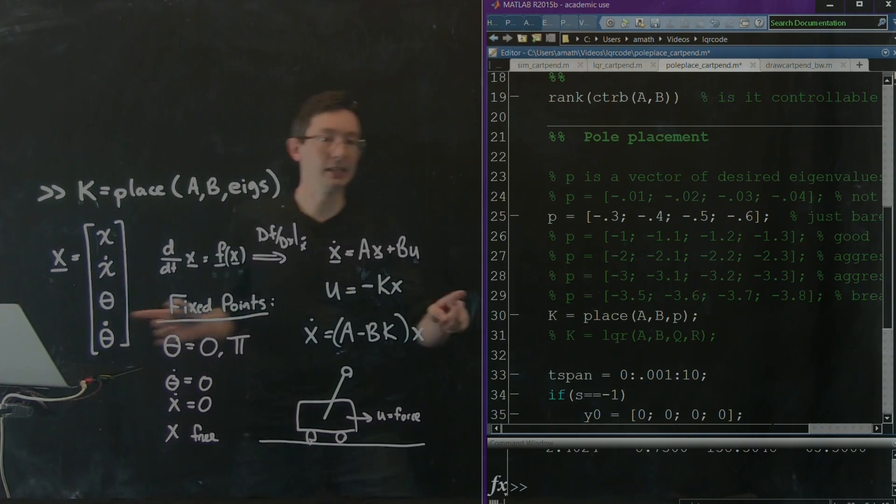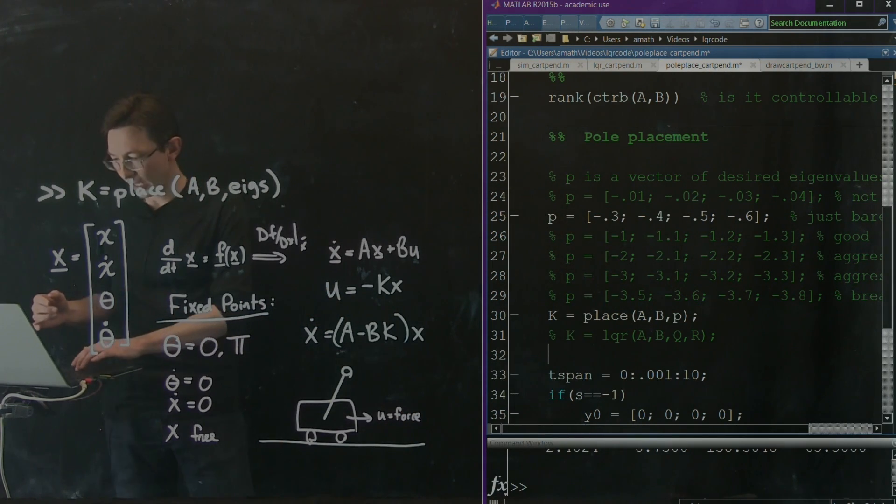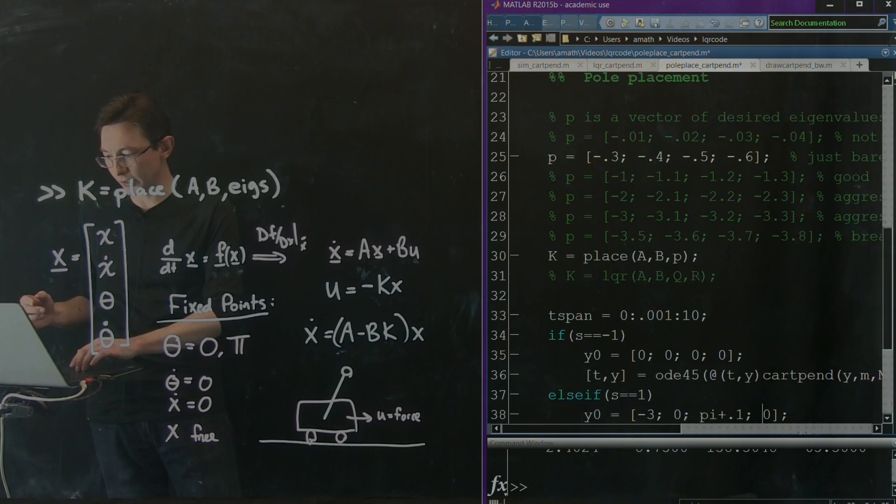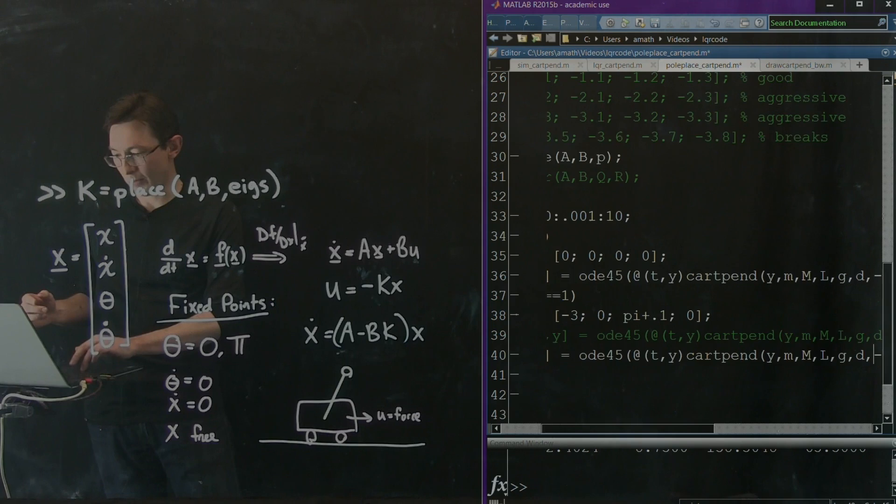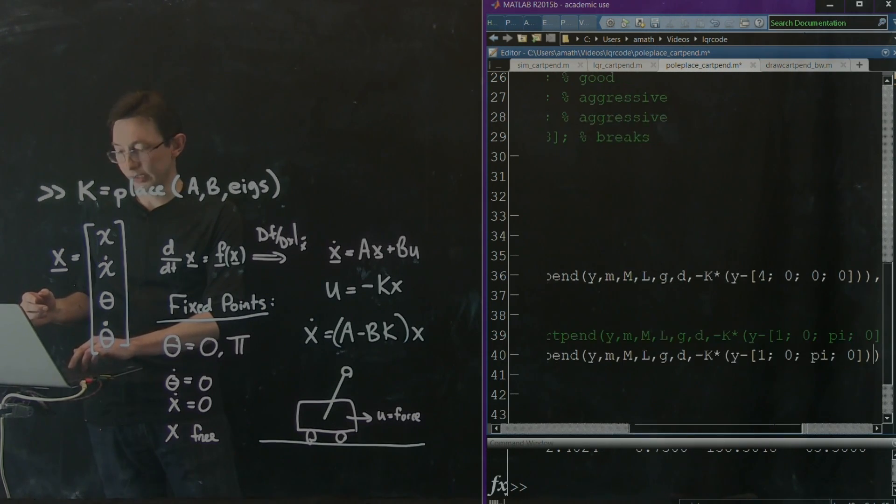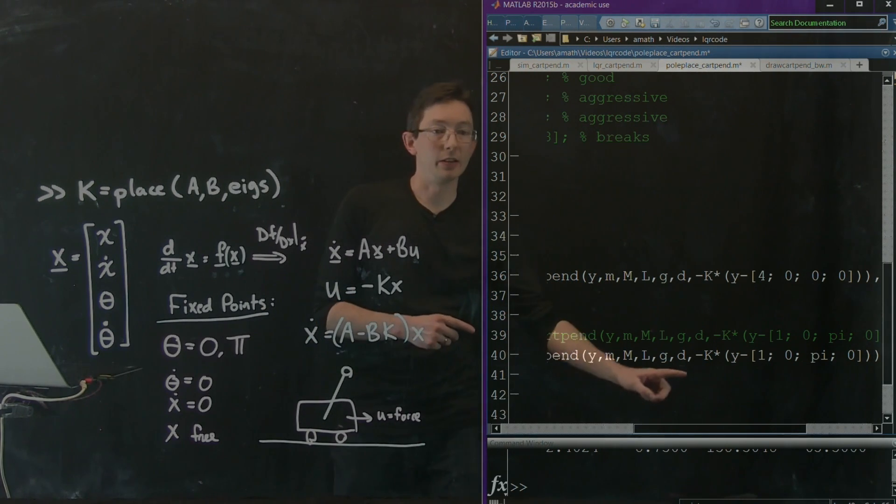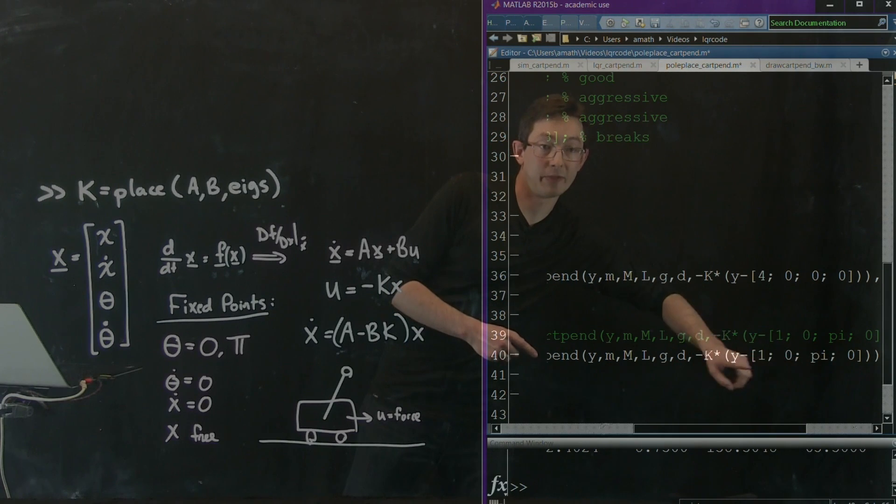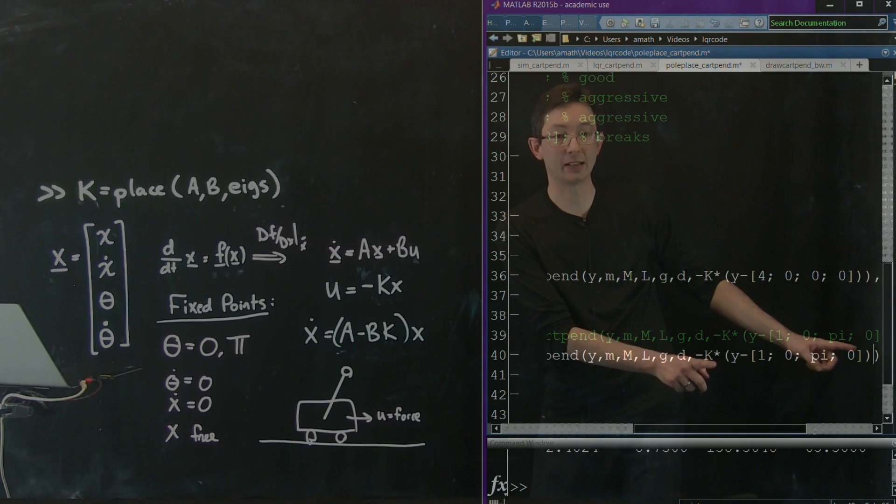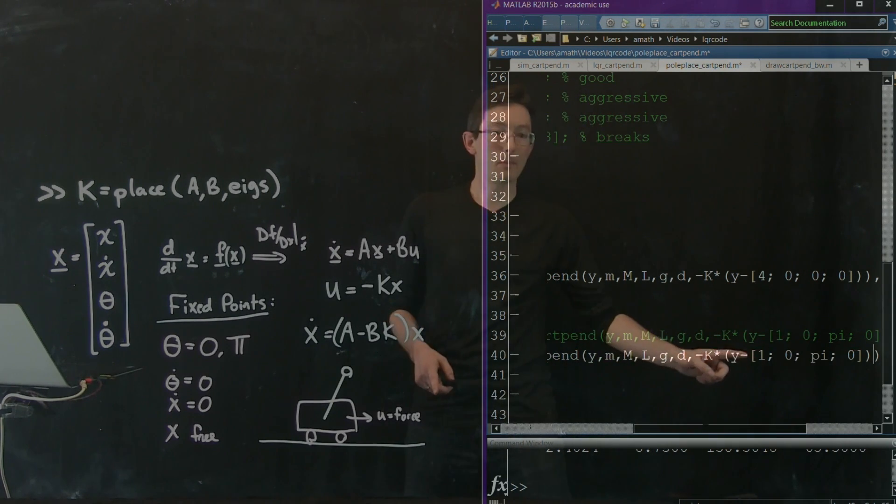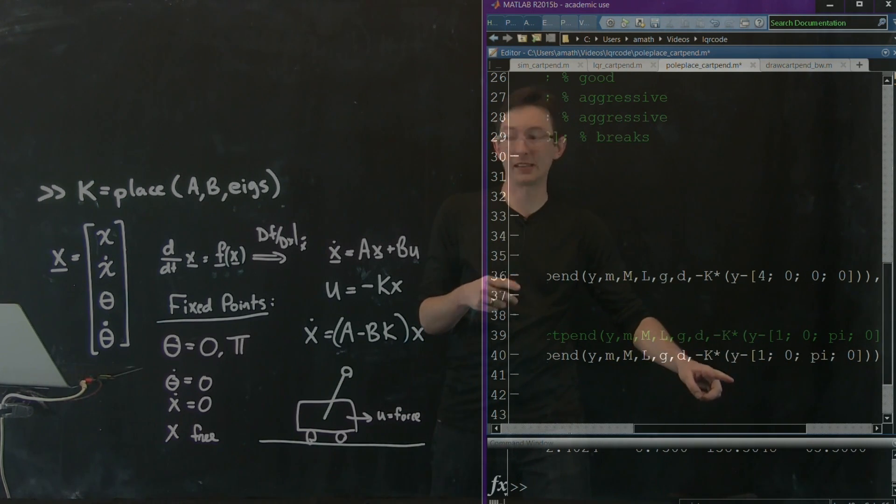Okay. So I do this place, k equals place a b p, where p is my list of eigenvalues. And then I'm going to essentially integrate the same vector field, that same cart pend vector field, except in the u position where the control is. Before I had zero, I had zero control. Now I'm going to plug in minus k times my state minus a reference value.